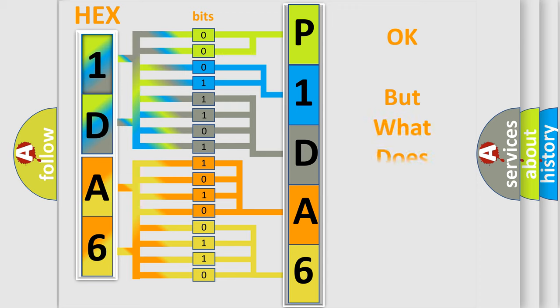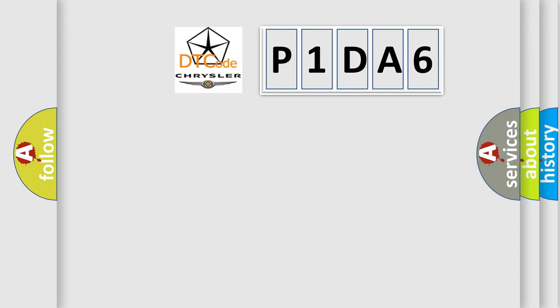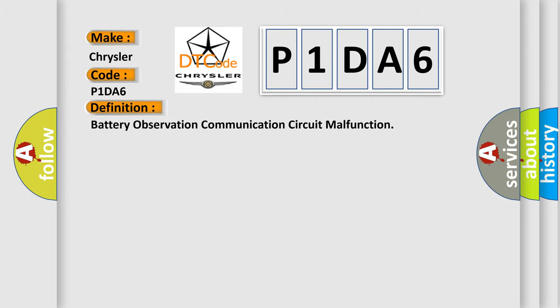We now know in what way the diagnostic tool translates the received information into a more comprehensible format. The number itself does not make sense to us if we cannot assign information about what it actually expresses. So, what does the diagnostic trouble code P1DA6 interpret specifically for Chrysler car manufacturers? The basic definition is: Battery Observation Communication Circuit Malfunction.